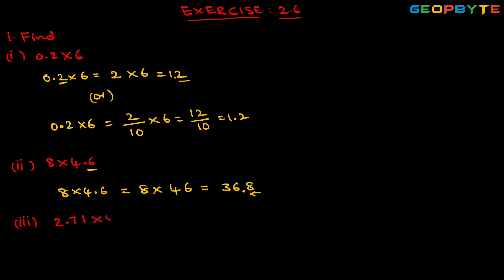2.71 into 5. We need to remove the decimal point, so we get 271 into 5. Multiplying 271 into 5 gives 1355. In the given decimal number 2.71, there are two digits to the right of the decimal point. So we need to move from the rightmost position to the left by two digits — that gives us 13.55. The result of 2.71 into 5 is 13.55.